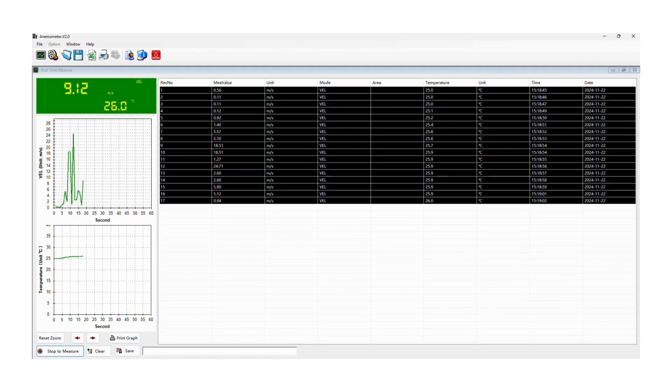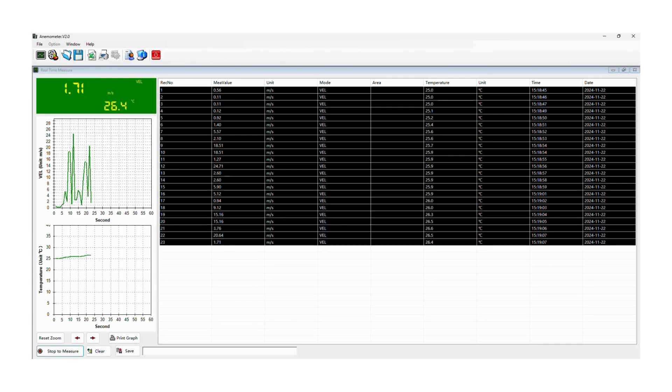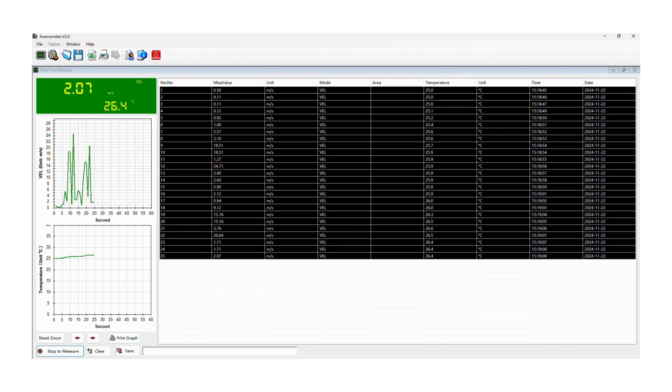The device also comes with software that allows you to record, save, and print your data. Simply connect the anemometer to your computer using the provided cable. That's it.